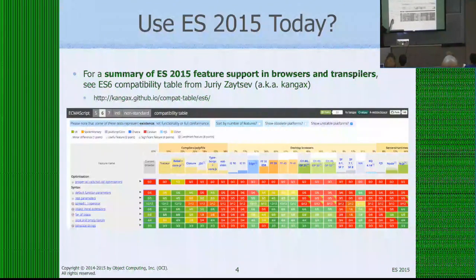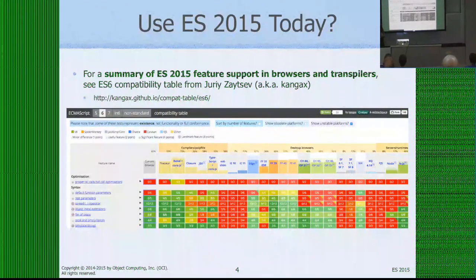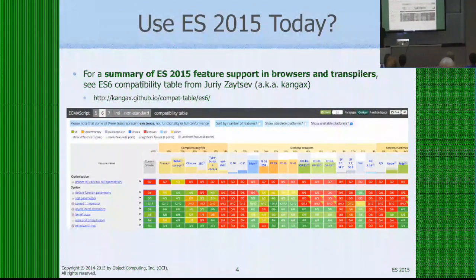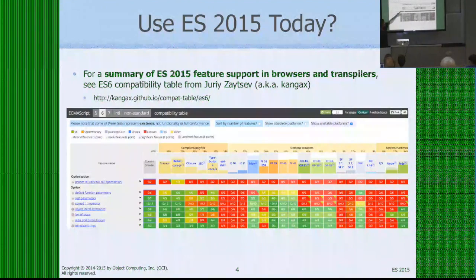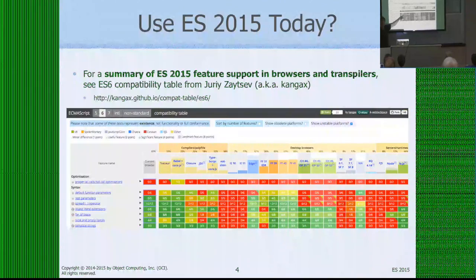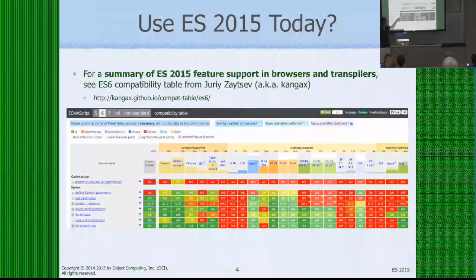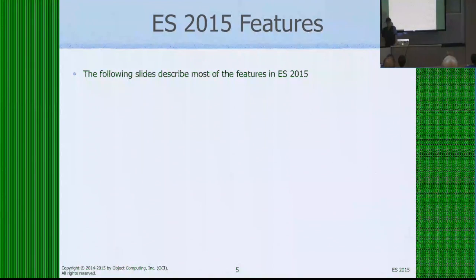If you just Google for kangax you'll probably end up at the compatibility table. You can see compatibility for ES5, 6, and 7, and down the side is a list of features. Many have sub-parts — click the little triangle and it shows you specifically what parts of that feature are supported. Note that this is testing for the existence of a feature, not necessarily that it conforms to the spec. For example, for Traceur and rest parameters it might say four out of five, meaning Traceur implements four of the five aspects.